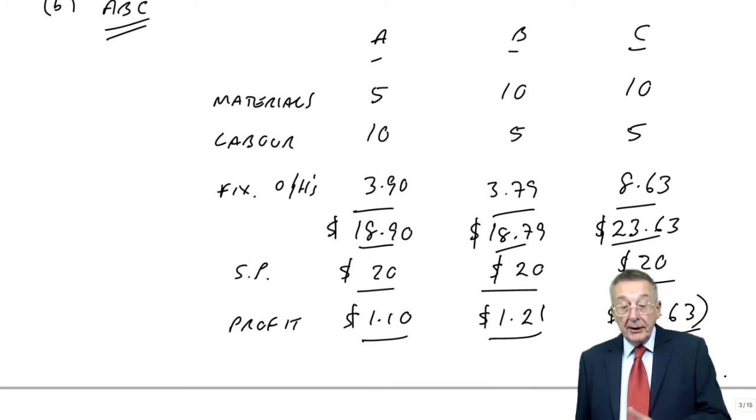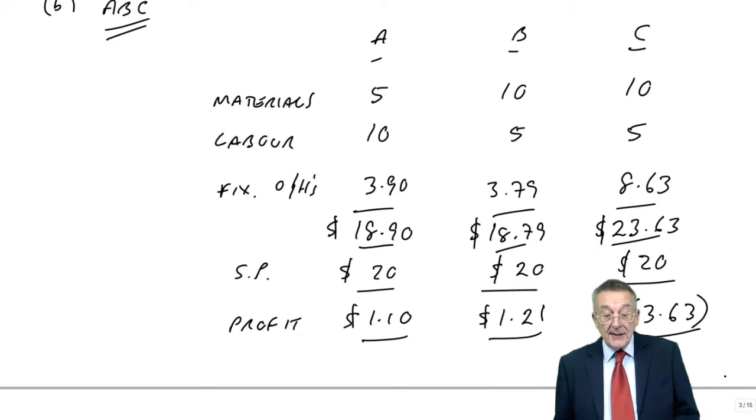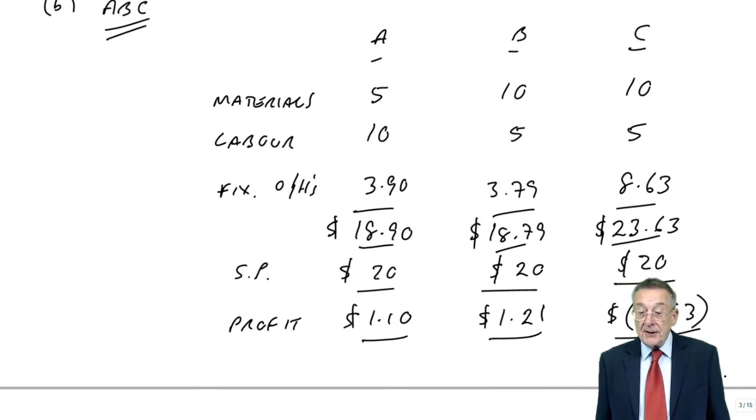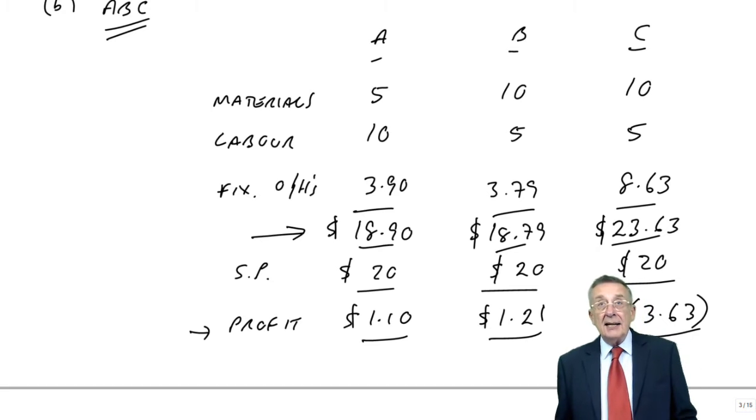In the previous lecture we went through the arithmetic. I hope it makes sense in using activity-based. There are the costs per unit we ended up with and the profits per unit. And obviously not always, but in this particular case,